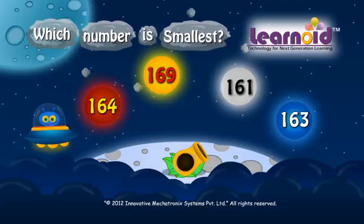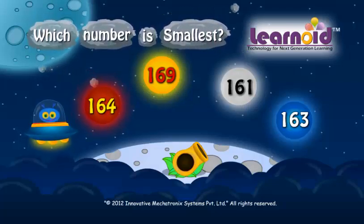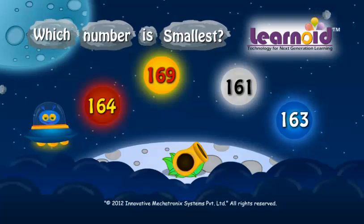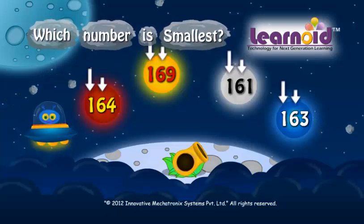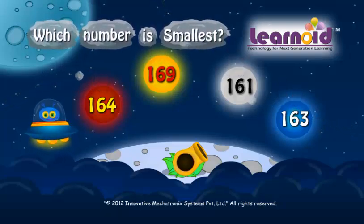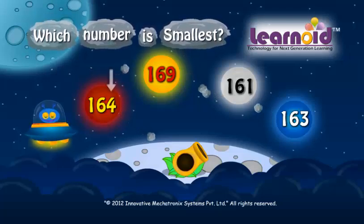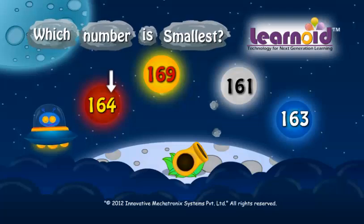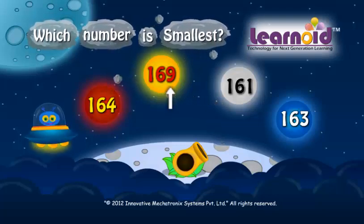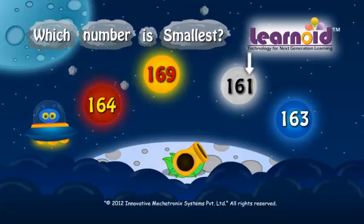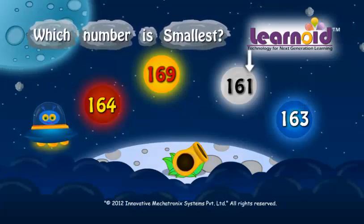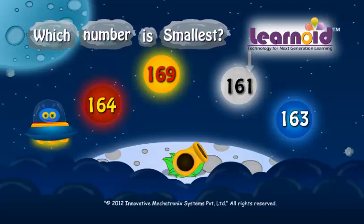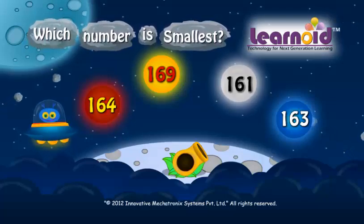Which number is smallest: 164, 169, 161, or 163? The first and second digits in all four numbers are the same, so we check the third digit. It is 4 in 164, 9 in 169, 1 in 161, and 3 in 163. One is the smallest of all, so 161 is the smallest.